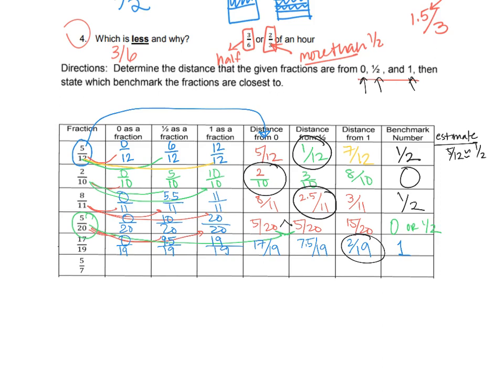For 17/19: zero is 0/19, one is 19/19, and halfway would be about 9.5/19. The distance from zero is 17/19, from the midpoint is about 7.5/19, and from one is 2/19. So 17/19 is closest to one — which makes sense because you only need two more nineteenths to make a whole.